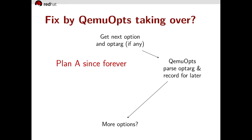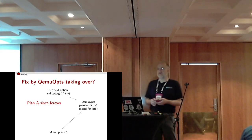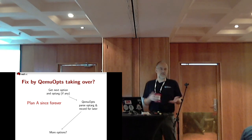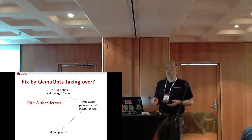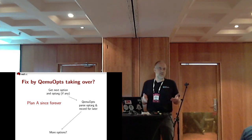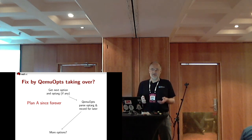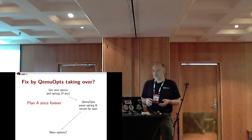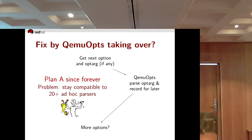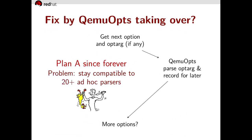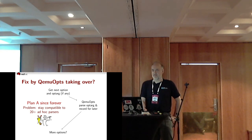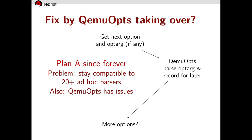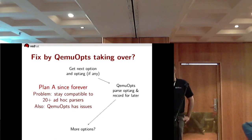So if the orange cloud and the purple cloud create so many problems, the fix seems obvious: get rid of them and have QEMUopts take over. This has in fact been plan A since forever. If something has been plan A since forever, there must be problems. One obvious one is that we want to stay compatible with more than 20 ad hoc parsers. But there's more — QEMUopts itself has issues, and I'll show you.